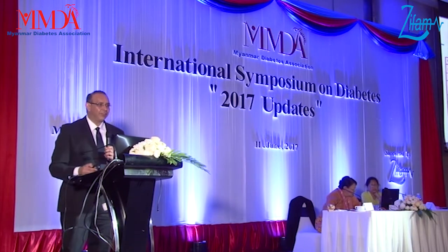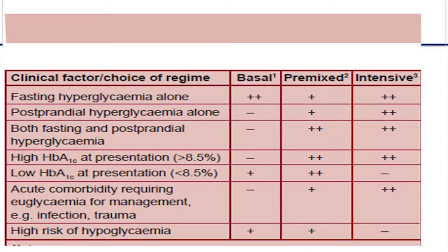To encapsulate: if it is fasting hyperglycemia alone, then basal insulin will be a good choice. If it is postprandial hyperglycemia, you can use premixed or intensive therapy. If it is both, you have to use intensive or premixed depending upon the patient's requirements and willingness. If the HbA1c is low at presentation — below 8.5 — basal may work, but usually our patients do not come to us that early.